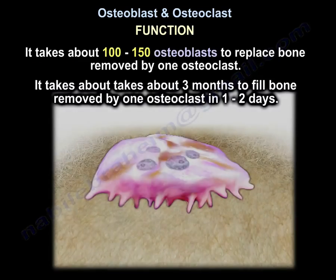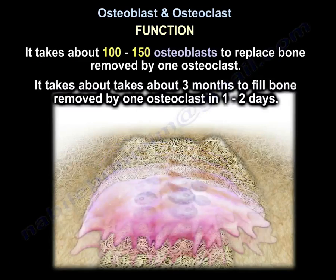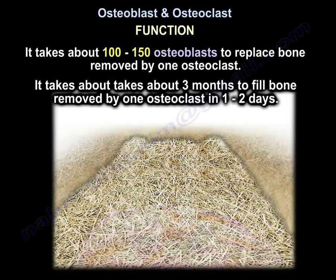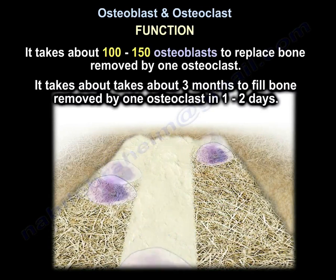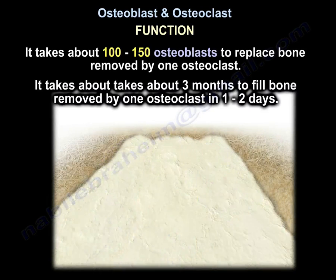The Osteoclast acts as the destructive machine. It takes about 100 to 150 Osteoplasts to replace the bone removed by one Osteoclast. It takes about three months to fill the bone removed by one Osteoclast in one to two days.